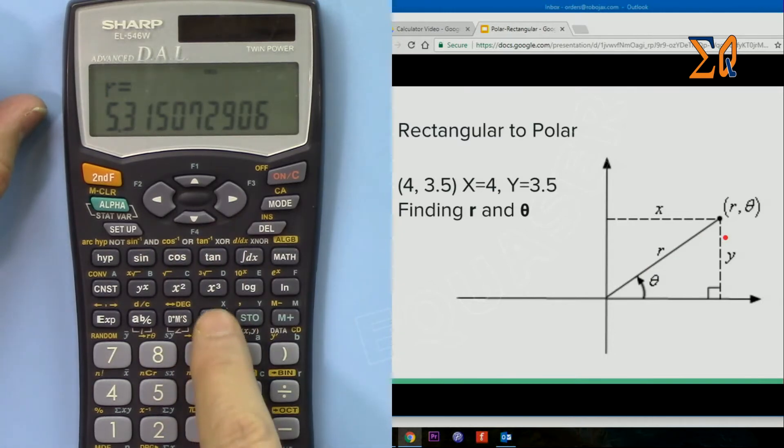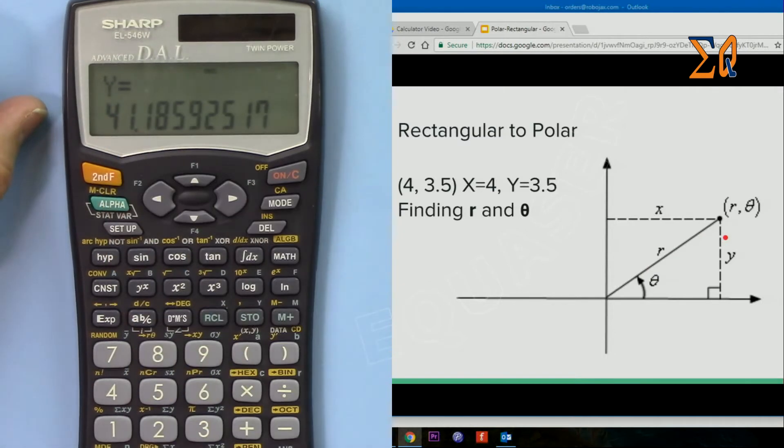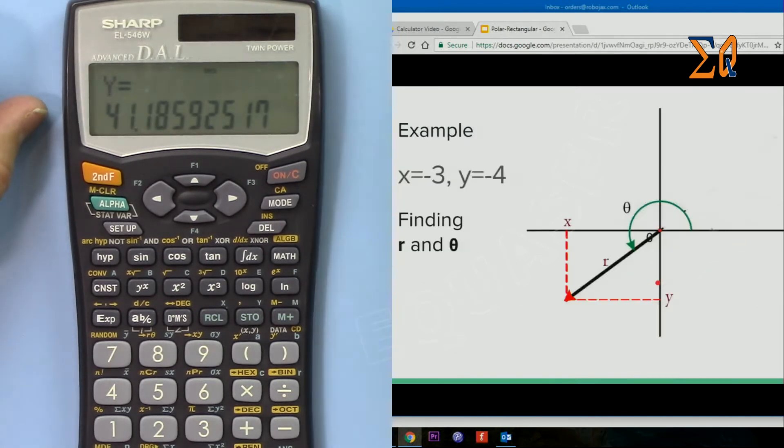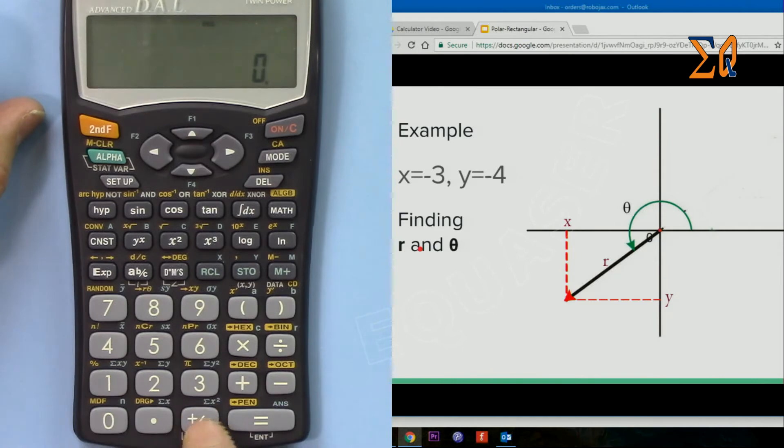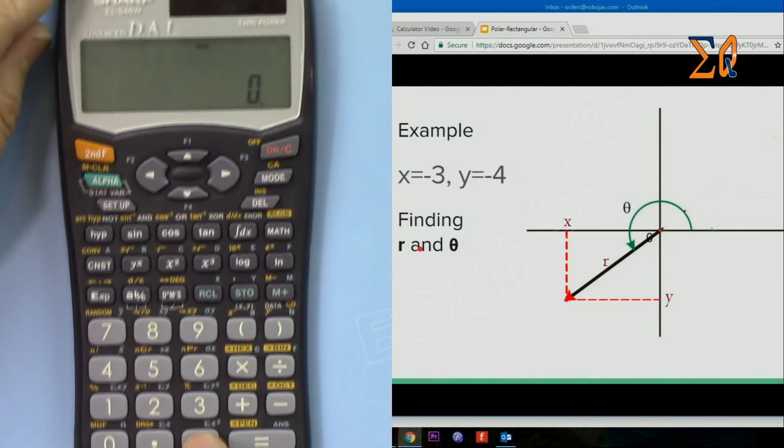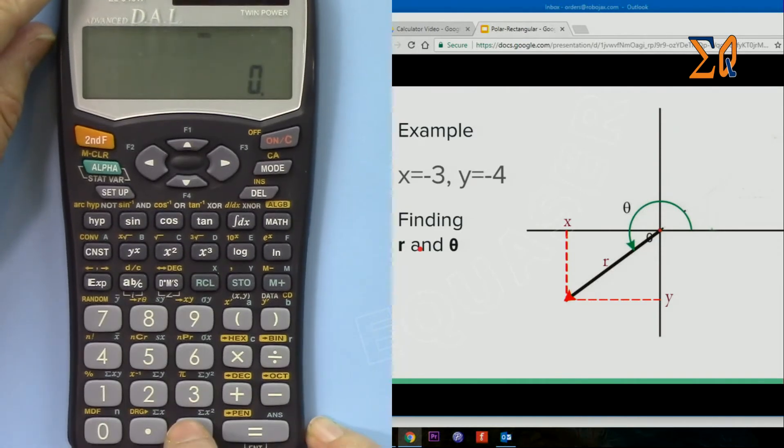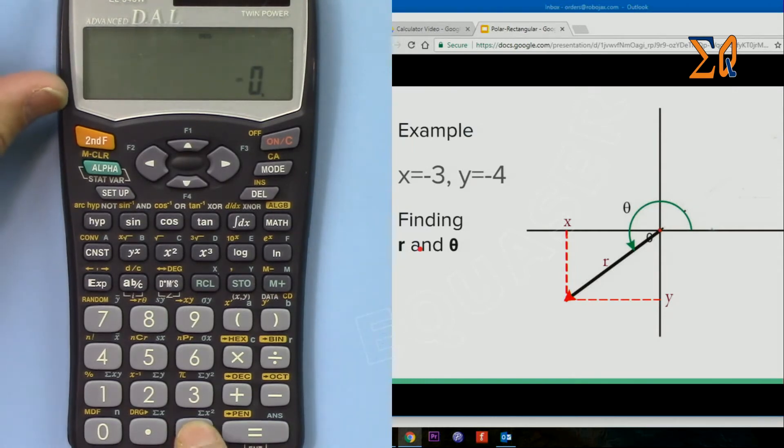Now you have X equals minus 3 and Y equals minus 4, as you can see here. We want to find r and theta. So for minus, I'm pressing this minus. So minus 3, second function comma, minus 4, and then this time I enter it.